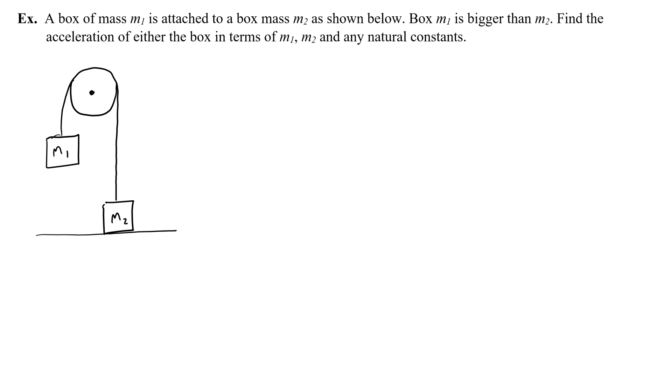In this video we're going to talk about how to solve Atwood's machine problems symbolically. This is common on the AP test in the free response section. So this would be an example of a question that you would get asked on the AP test. A box of mass m1 is attached to a box of mass m2 as shown below. Box m1 is bigger than box m2. Find the acceleration of either box in terms of m1, m2, and any natural constants.